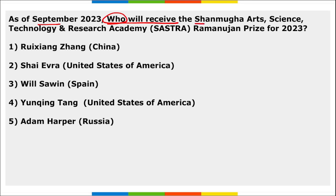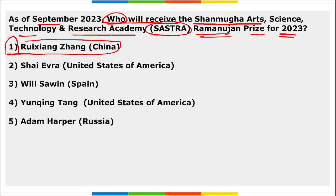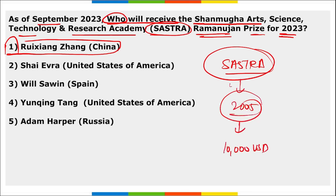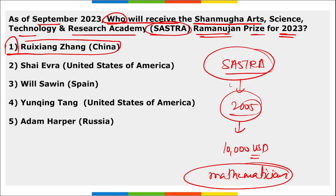The SASTRA Ramanujan Prize for 2023 will be received by Ruzhang Zhang of China. The SASTRA Ramanujan Prize (Shanmuga Arts, Science, Technology and Research Academy Ramanujan Prize) was started in 2005 with a cash prize of $10,000 USD. It is given annually to mathematicians below the age of 32 years.